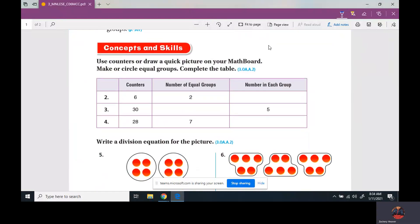It says use counters or draw quick pictures on your math board. Well, we don't have that here. So you have six counters and you put them in two equal groups like this. And you put six in, there's going to be three in each group because three times two equals six. You can do the same thing here. Instead of drawing, five times what equals 30? We'll skip count: five, ten, fifteen, twenty, twenty-five, thirty - six.